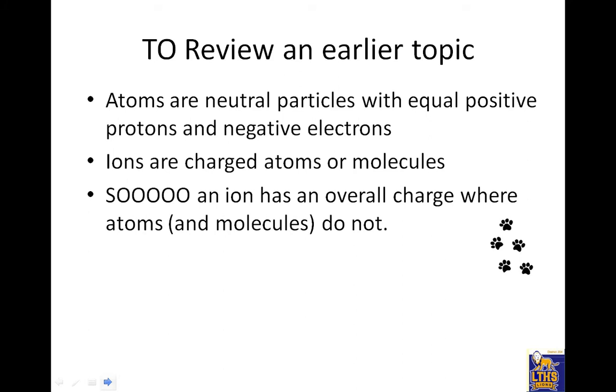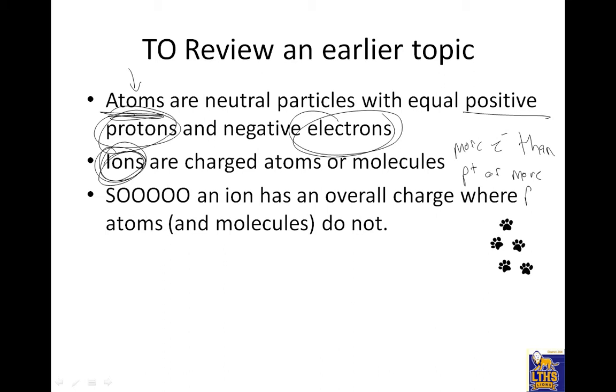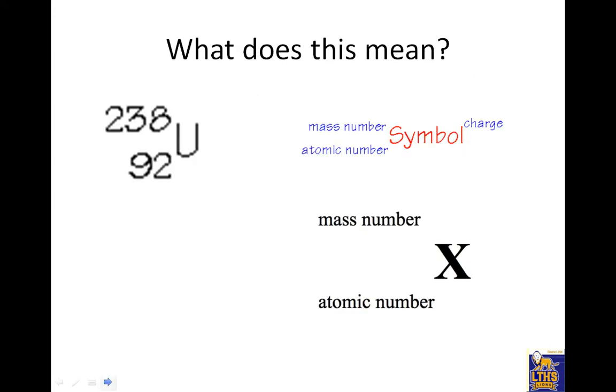Atoms are neutral particles with equal positive protons and negative electrons. So atoms are neutral. Not everything we do are atoms, so they have the same number of protons and the same number of electrons if it's an atom. Ions are a lot like atoms, but the difference is they have a charge. They're charged atoms or molecules. That means they have more electrons than protons, or more protons than electrons. So an ion is anything with a charge, and atoms and molecules don't.